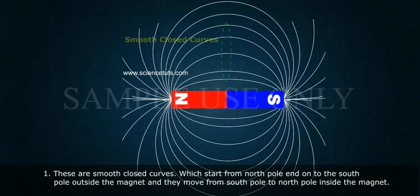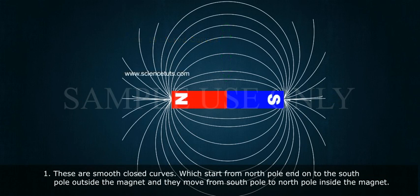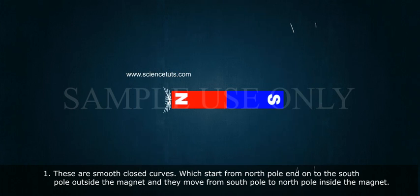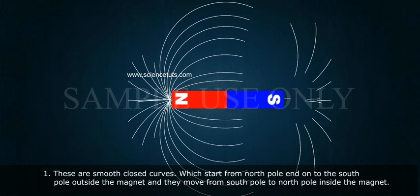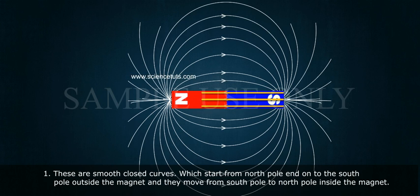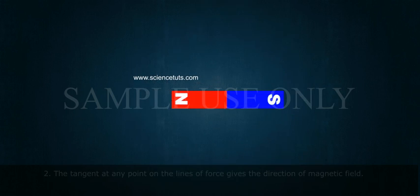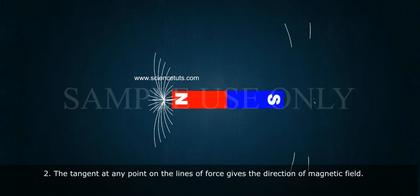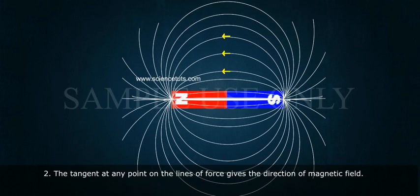Properties of magnetic lines of force. One: these are smooth closed curves which start from the north pole and end at the south pole outside the magnet, and they move from the south pole to the north pole inside the magnet. Two: the tangent at any point on the lines of force gives the direction of the magnetic field.